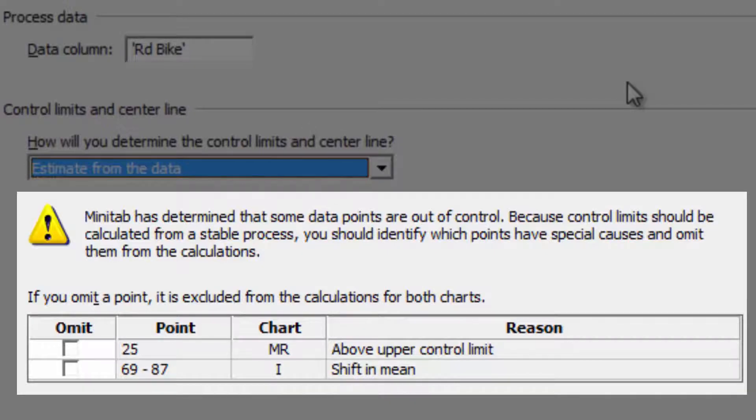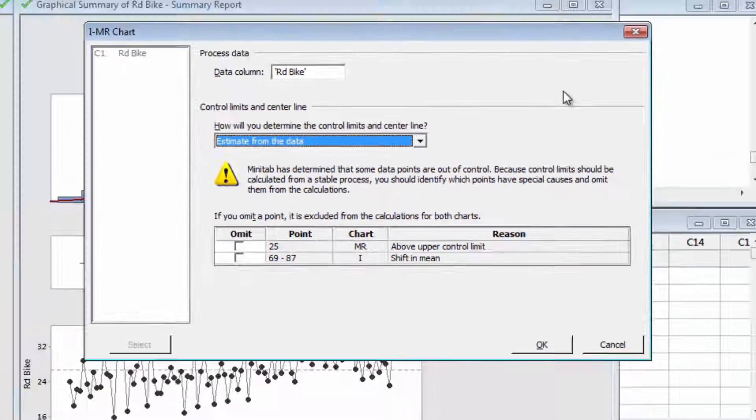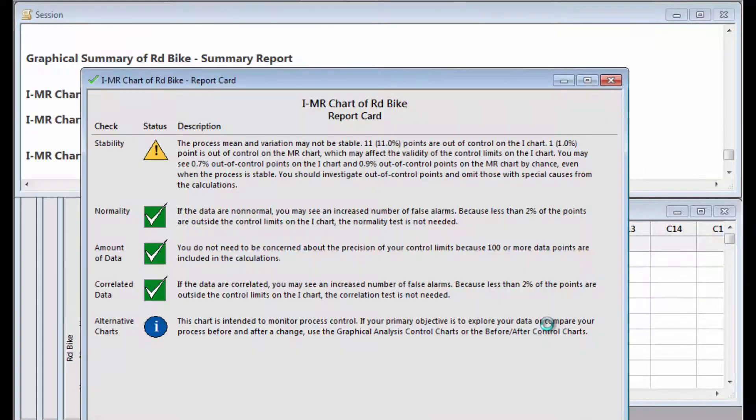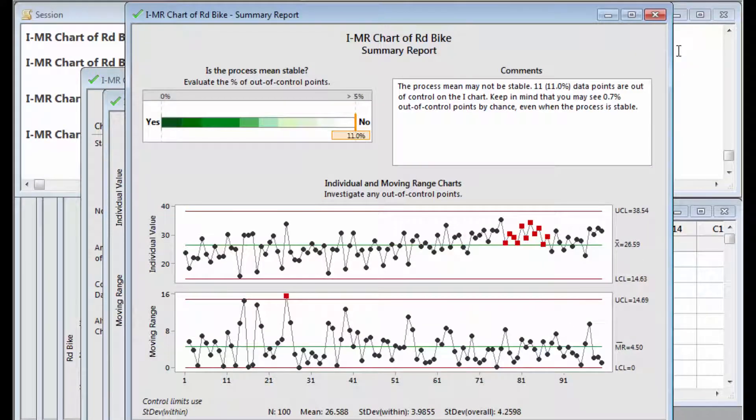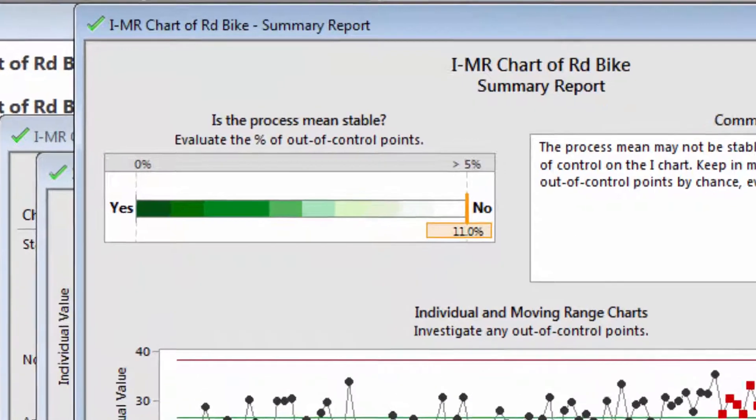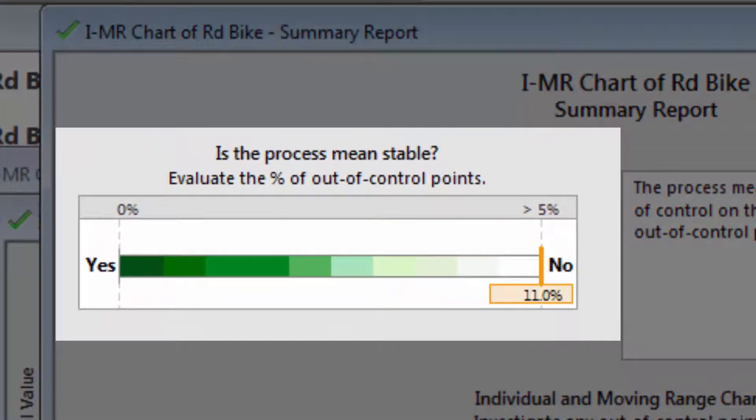The Assistant produces a report card, a diagnostic report, and a summary report. The summary report indicates that with the process Joel is using now, the process mean is not stable, and he cannot accurately predict whether he's going to make it to work on time or not.